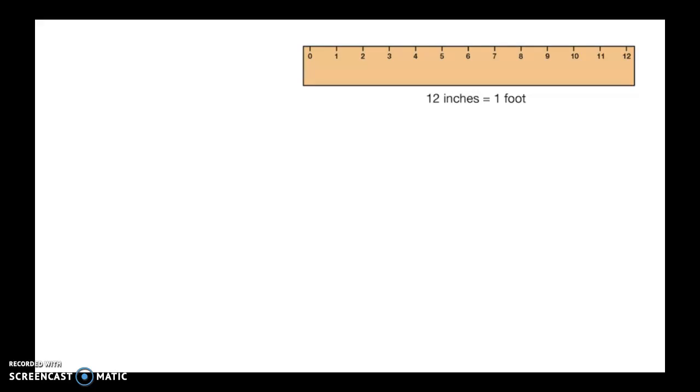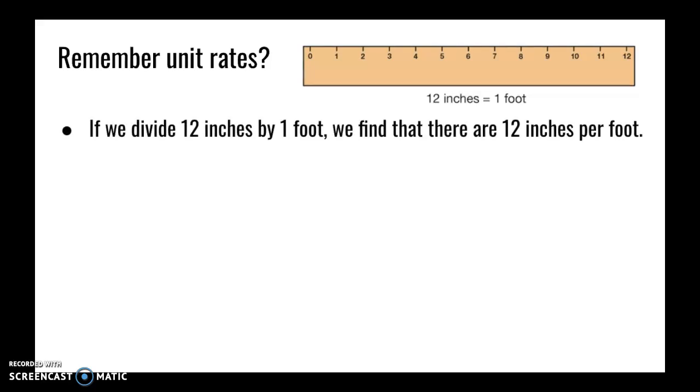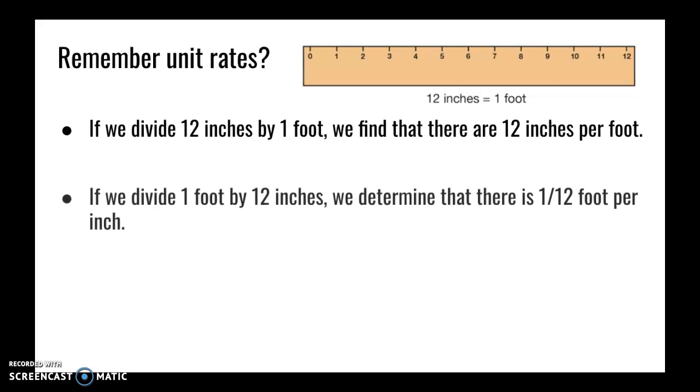So you know that there are 12 inches in one foot. Do you remember unit rates? If we divide 12 inches by 1 foot, we find that there are 12 inches per foot. If we divide 1 foot by 12 inches, we determine that there is 1/12 of a foot per inch. The units are always going to stay in the same order in which you divide.